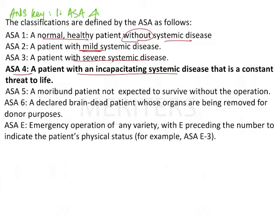ASA 5 is a moribund patient not expected to survive without the operation. An example would be a road trauma accident patient or a patient who has had a tension pneumothorax — such a patient would come under ASA 5.